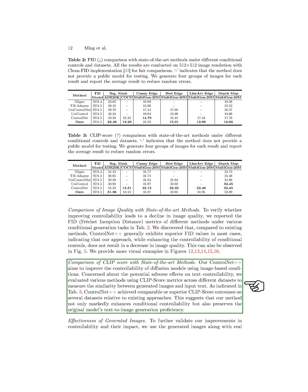We aim to enhance the controllability of models by using image-based conditions with our ControlNet++. We evaluated various methods using CLIP Score metrics across different datasets to measure the similarity between generated images and input text. Our ControlNet++ showed comparable or superior CLIP score outcomes on several datasets compared to existing approaches, indicating that our method improves conditional controllability while maintaining the text-to-image generation proficiency of the original model.